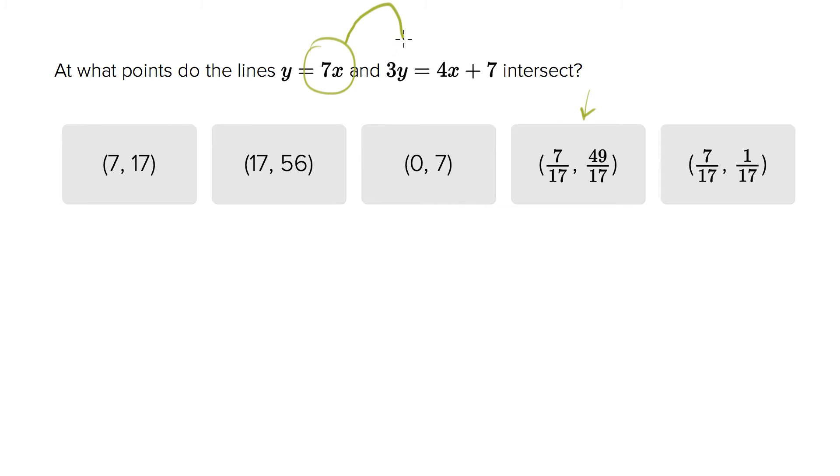We have y equals 7x. Let's plug that in everywhere we have a y, so you get 3 times 7x equals 4x plus 7. So 21x equals 4x plus 7. 21x minus 4x equals 7. 17x equals 7, or x equals 7 over 17.